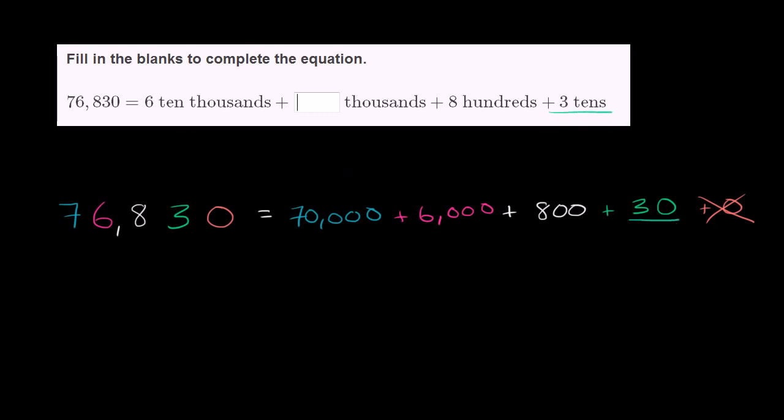Let me do this in a color you can see. You have eight hundreds, you have 800. But then that's where it starts to break down. They have blank thousands, here we have six thousands, so we're going to have to think about this a little bit.